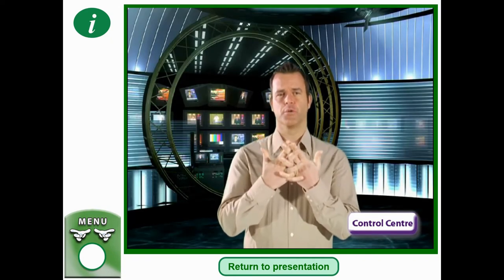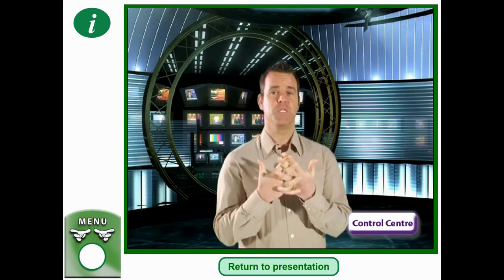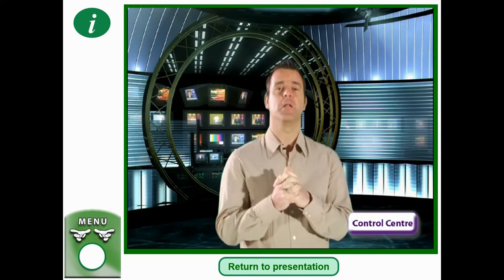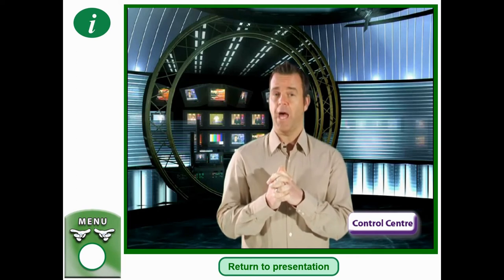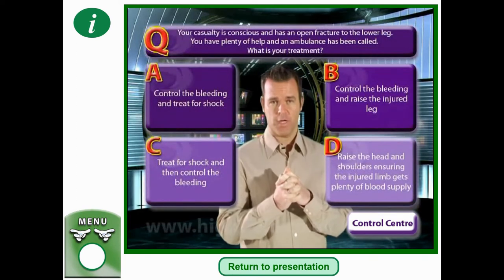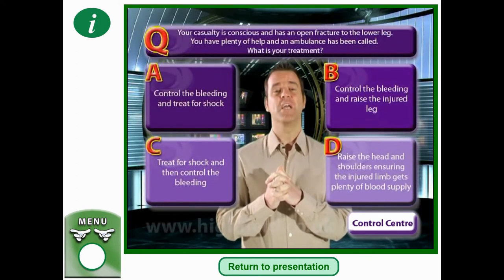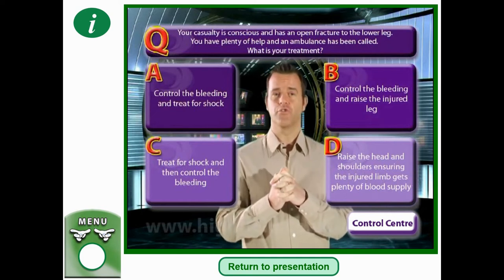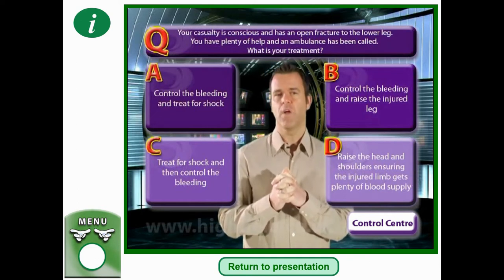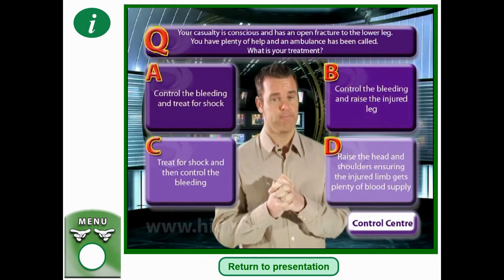Your casualty is conscious and has an open fracture to the lower leg. You have plenty of help and an ambulance has been called. What is your treatment? A: Control the bleeding and treat for shock. B: Control the bleeding and raise the injured leg. C: Treat for shock and then control the bleeding. Or D: Raise the head and shoulders ensuring the injured limb gets plenty of blood supply.